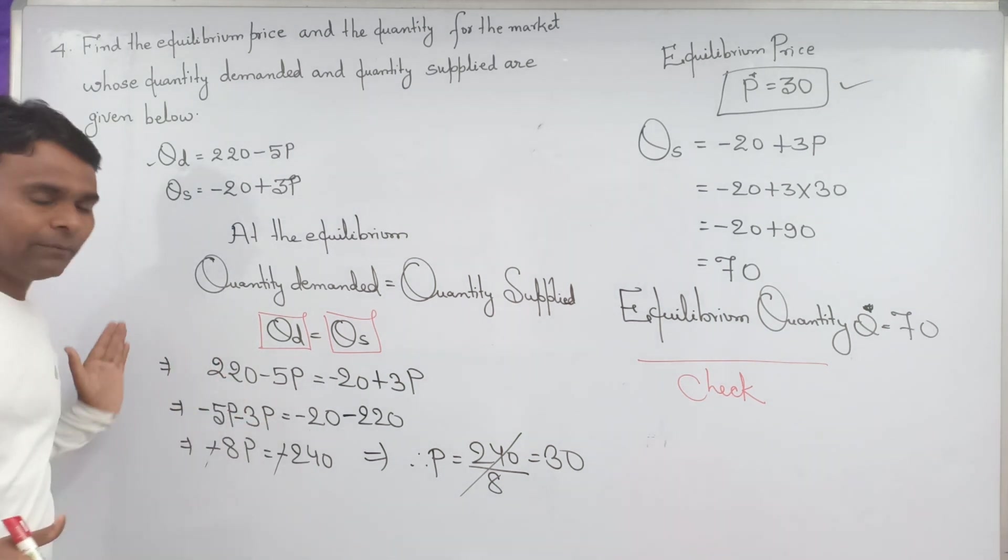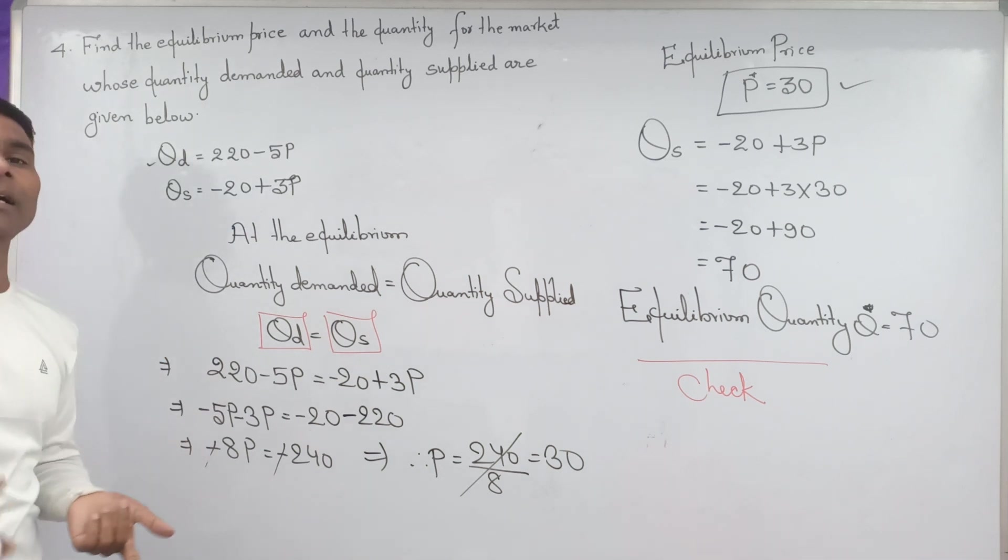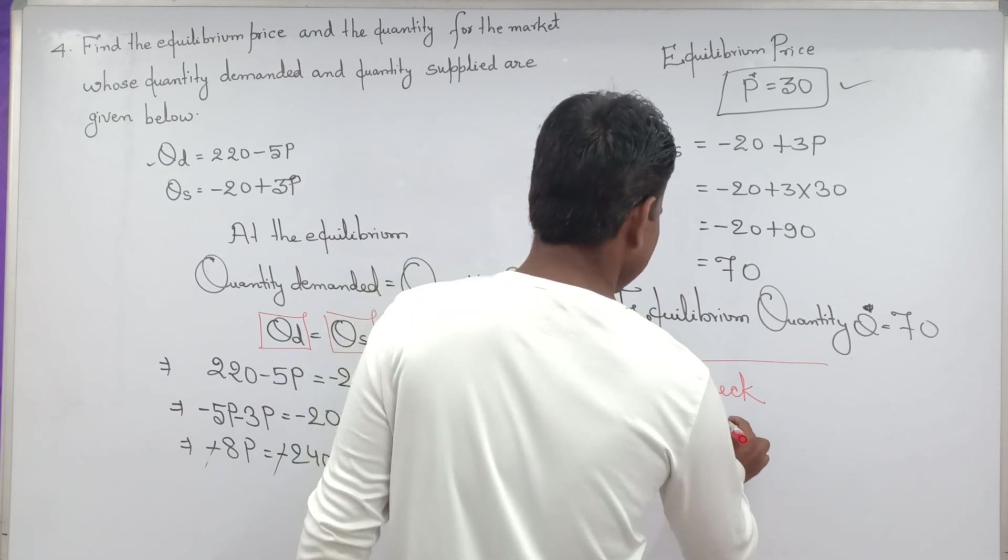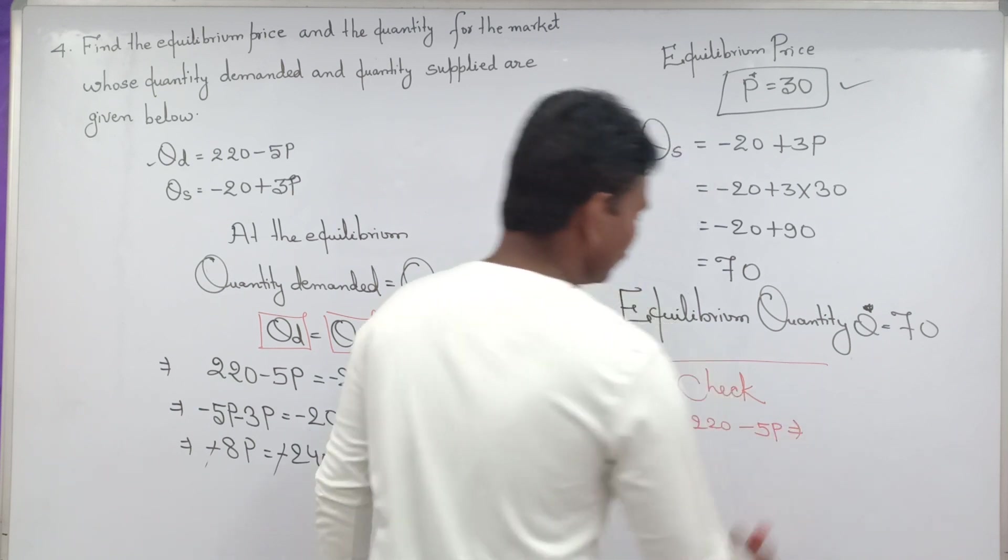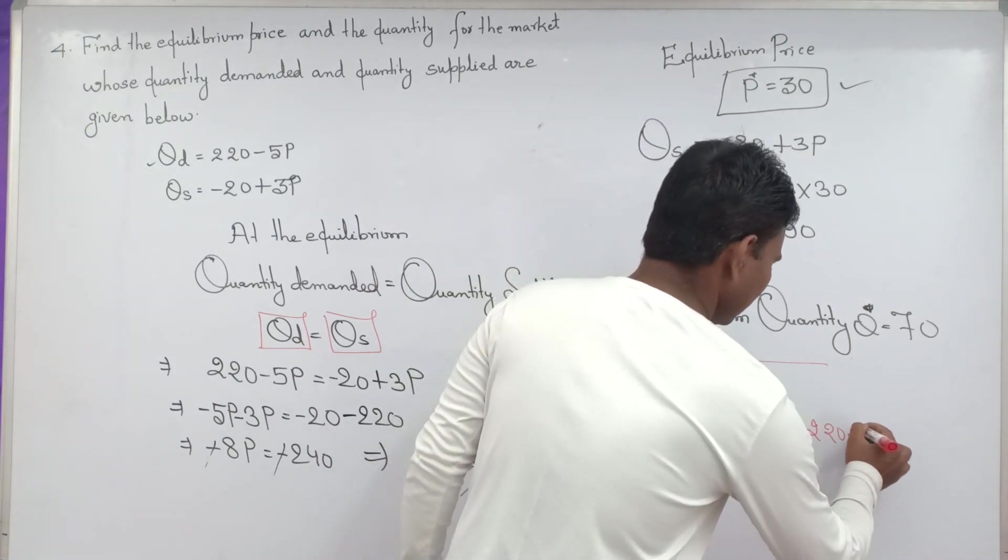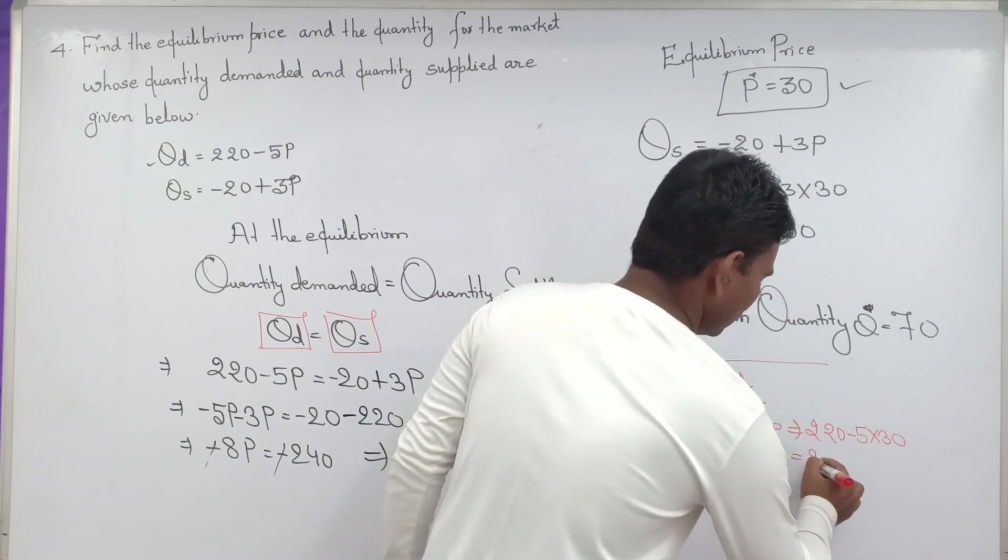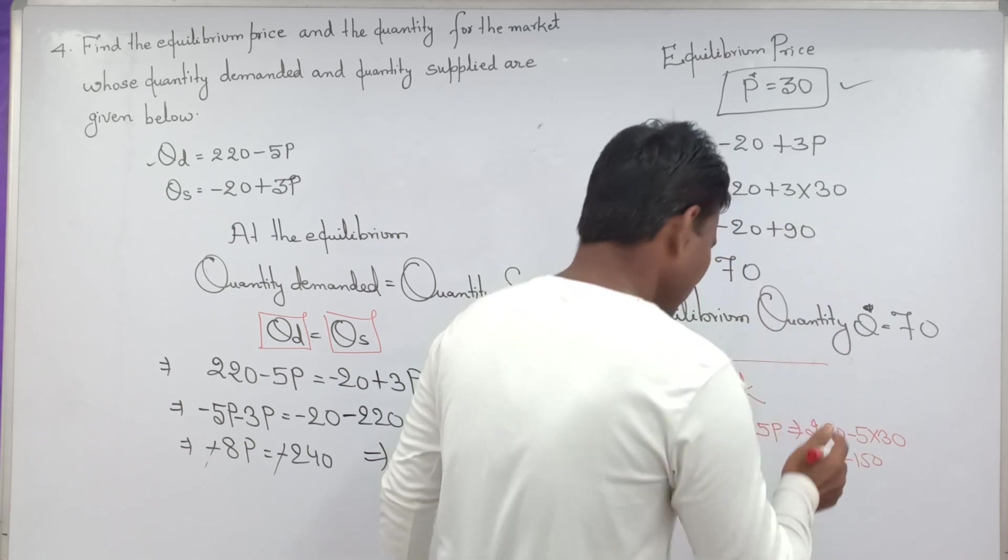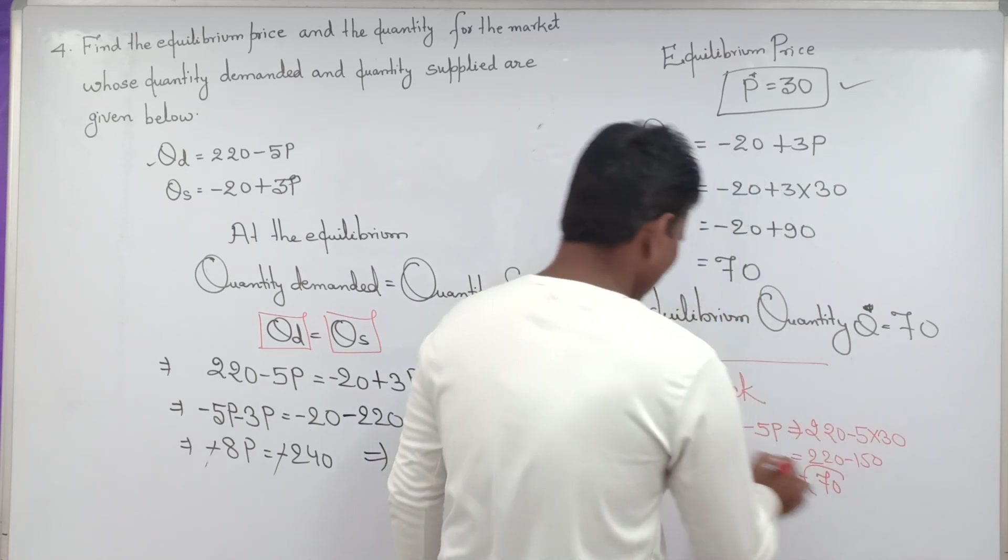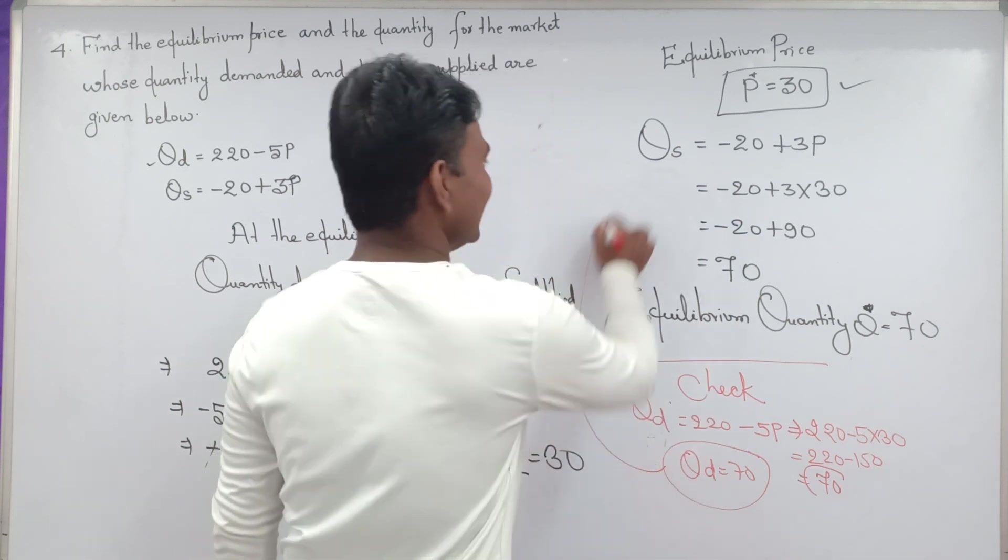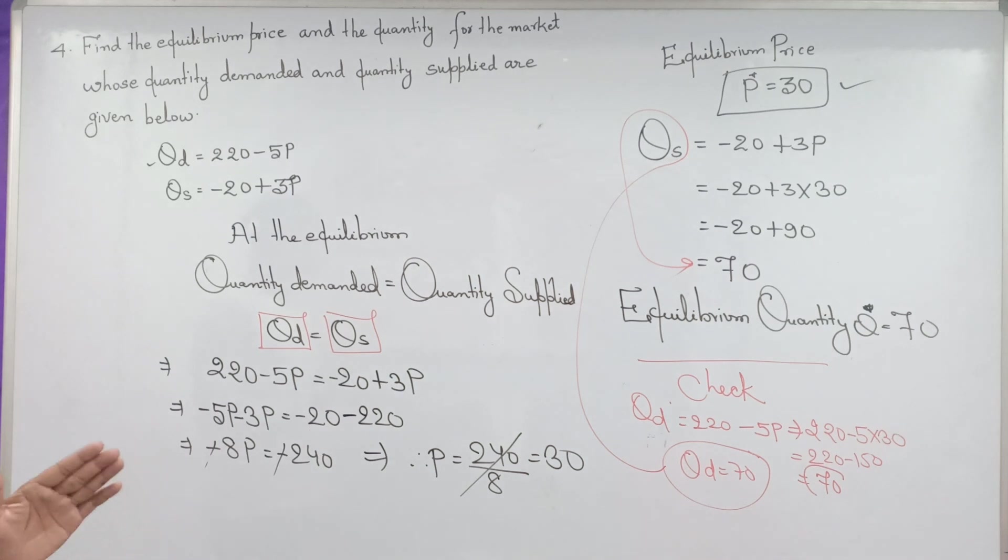We have to check quantity demanded equal to quantity supply, just substituting the value of P in these two demand and supply equations. QD equal to 220 minus 5P, and what value we got for P equal to 30. Now we can see 220 minus 5 into 30, that is 220 minus 150, just subtracting we get it 70. So QD equal to 70, and QS already we got 70. So our solution is correct.